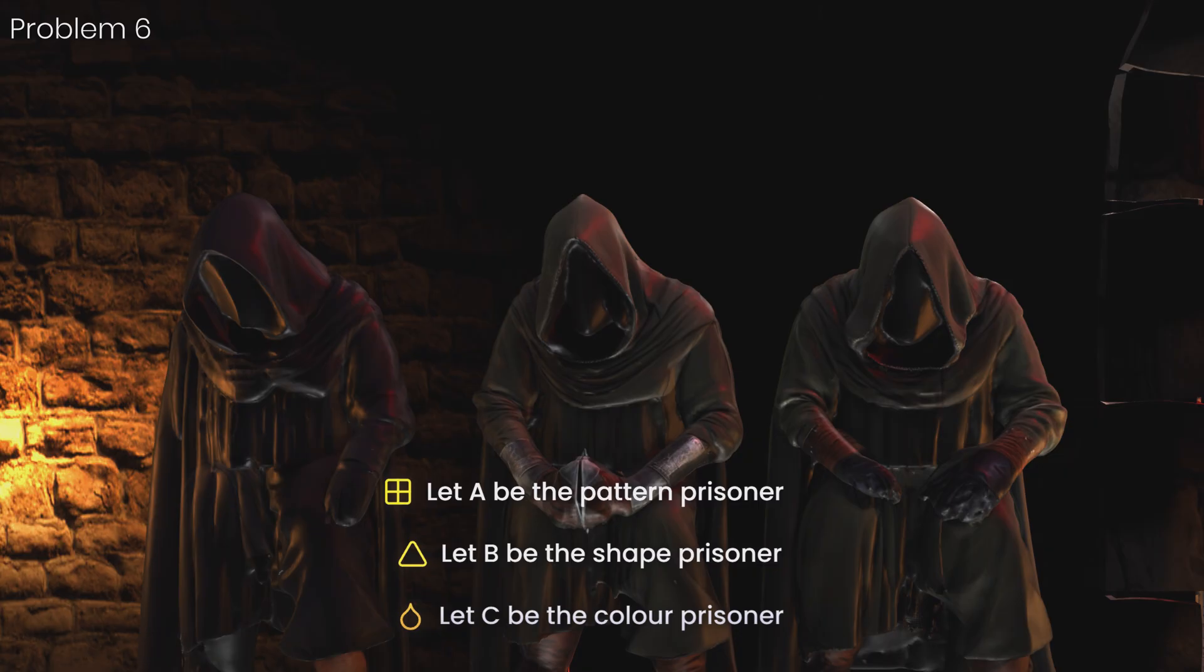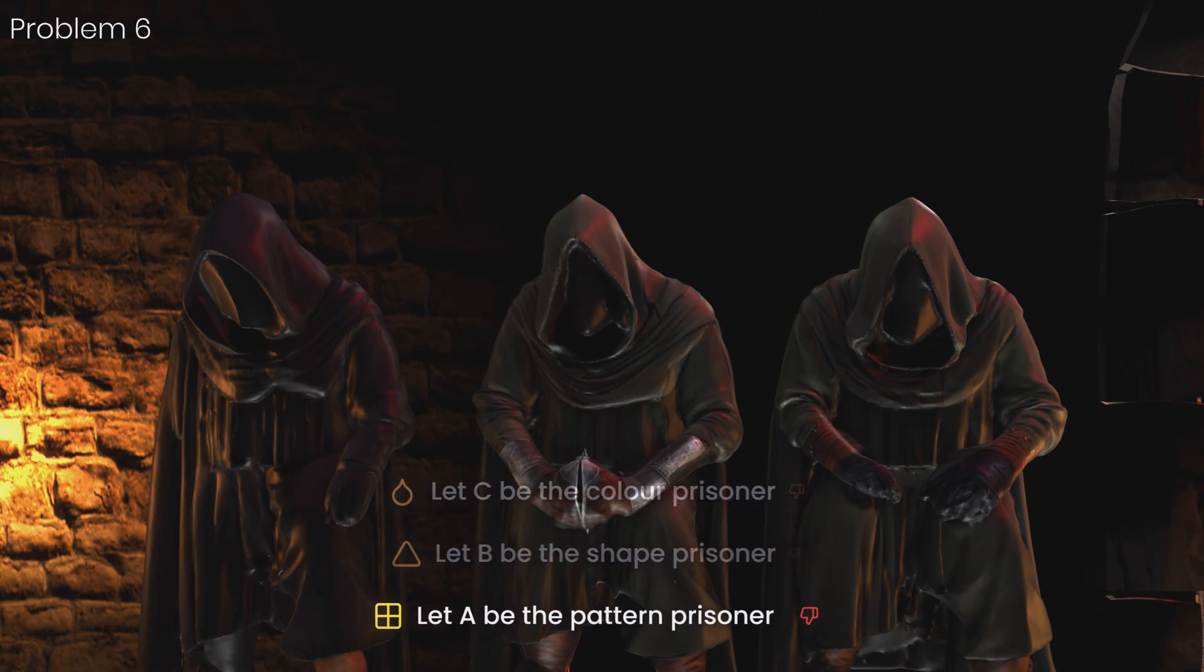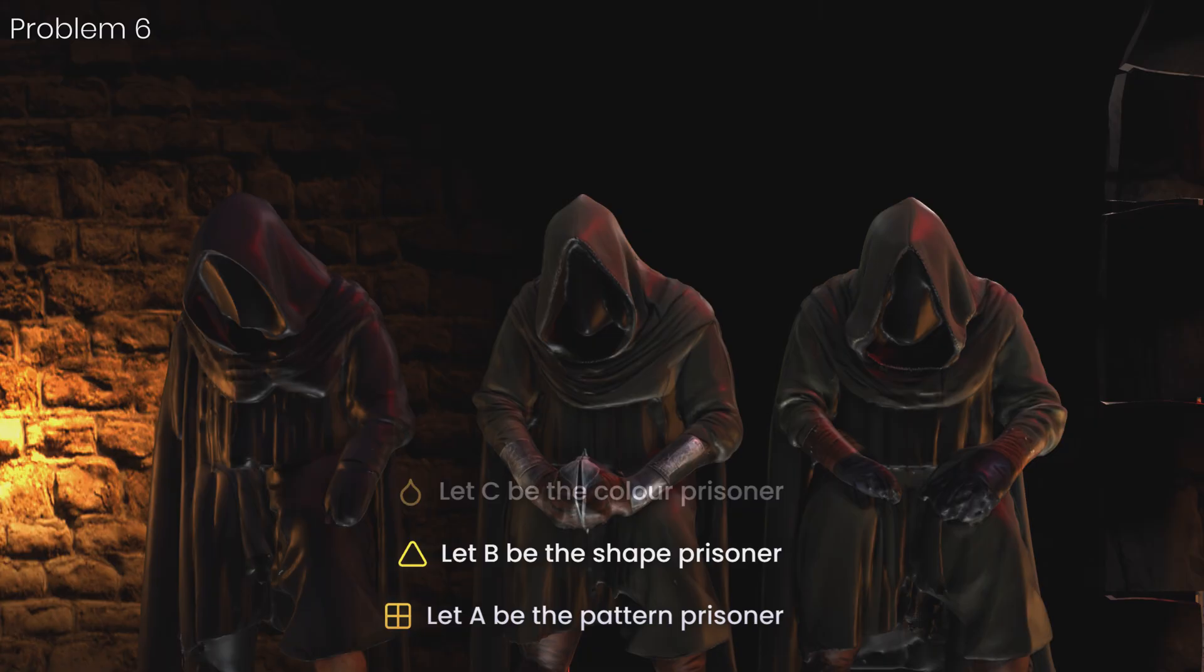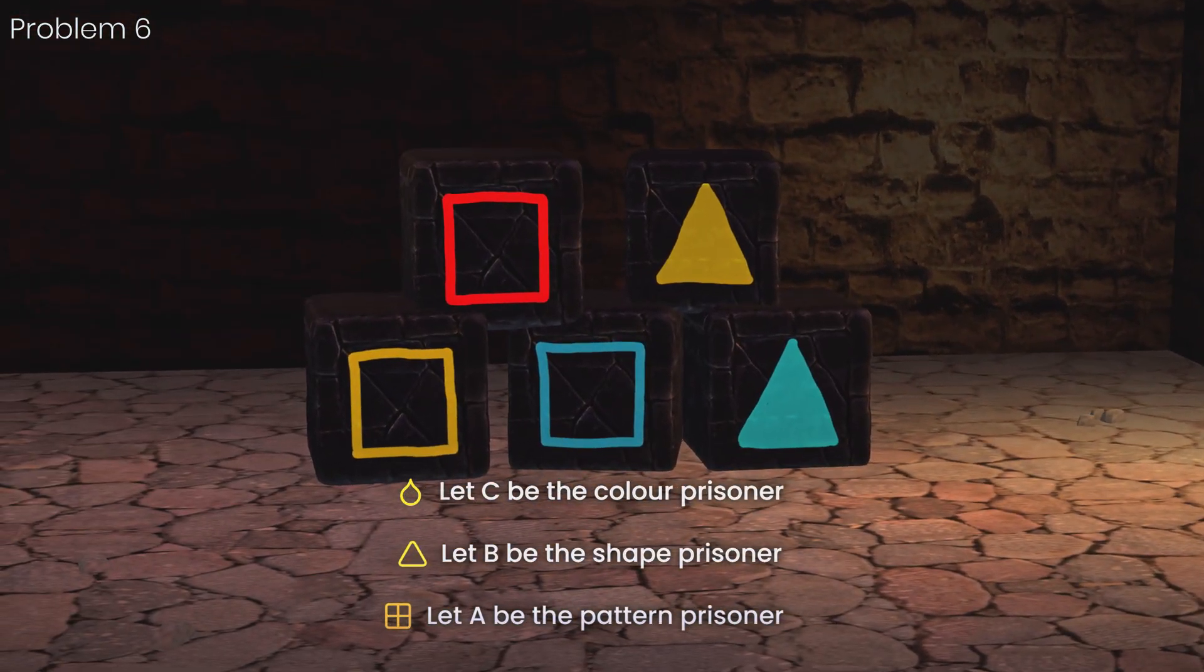In the worst case, A is the third person we ask, making the first two responses useless. We must repeat our sequence to ensure B has answered after A. Then we must ask our last question to C, who finally has enough information to tell us whether it's the red square or the remaining four boxes.